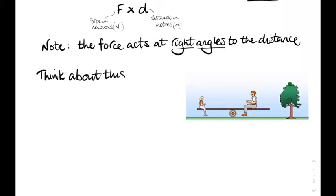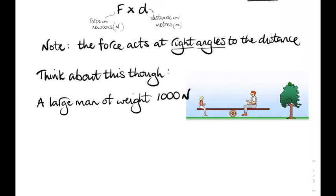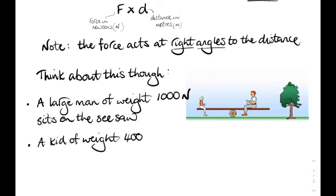Let's think about this one. This time it's a big heavy guy and a wee light kid. How do we get the seesaw to balance? It's a large man. His weight is a thousand newtons. And he's sitting on the seesaw. And the kid has got a weight of 400 newtons. How do they balance the seesaw?